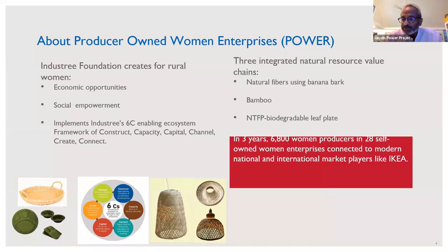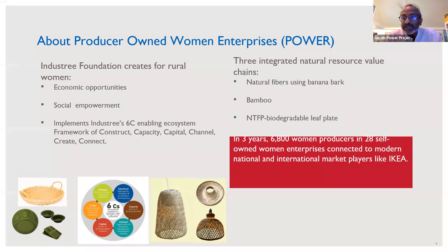We've been working in the POWER project in three value chains: natural fibers using banana bark which is otherwise burnt in the fields, bamboo, and non-timber forest products or NTFP, where the main product is biodegradable leaf plates. Over three years we will be covering 6,800 women in 28 cell phone enterprises.